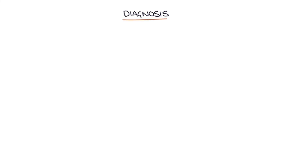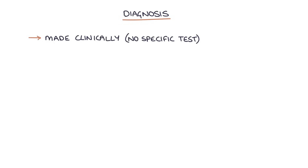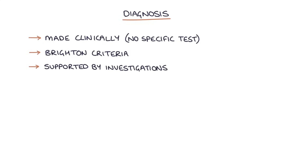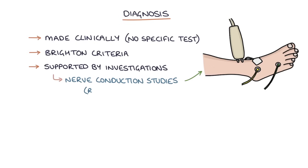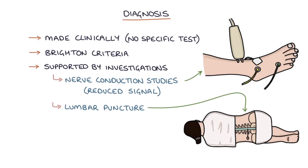How do you make a diagnosis? A diagnosis of Guillain-Barré syndrome is made clinically — there's no specific test that confirms a definitive diagnosis. There are criteria called the Brighton criteria that can be used, and it can be supported by investigations such as nerve conduction studies, which show reduced signal throughout the nerves, and lumbar puncture to test the CSF. In exams, the CSF of somebody with Guillain-Barré may show raised protein with a normal cell count and normal glucose.